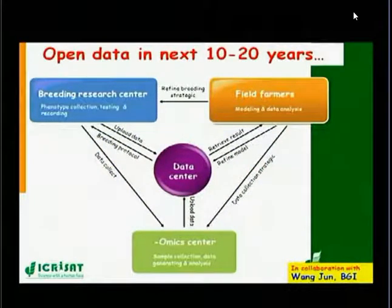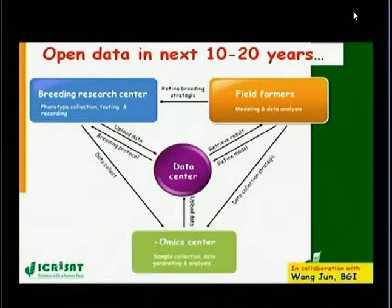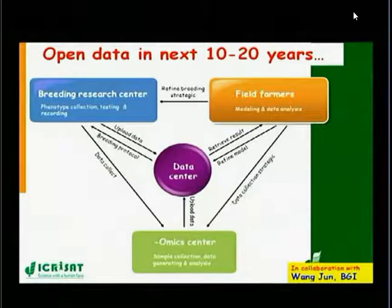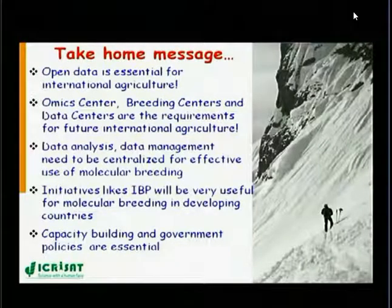In coming years, global data centers need to have linkages on one hand with omic centers — such as genotyping or sequencing service centers — where interfaces for uploading sequencing or genotyping data exist. On the other hand, there need to be linkages with breeding research centers, where CGIAR centers can play a very important role, and with field farmers through national agriculture research systems. This model can only work when all partners involved put their data as open data. Open data is essential for international agriculture, and omic centers, breeding centers, and data centers are the requirements for future international agriculture. Data management, analysis, and interpretation need to be centralized for effective use of molecular breeding.